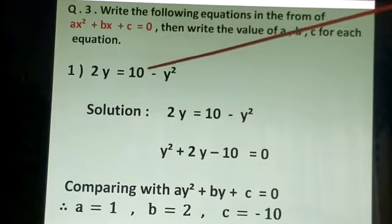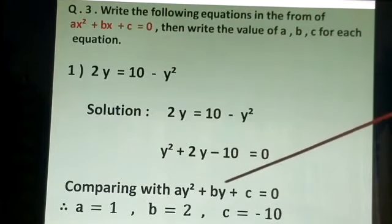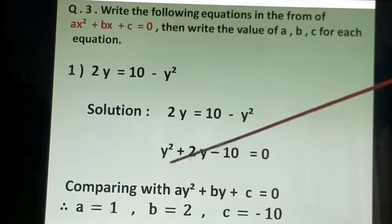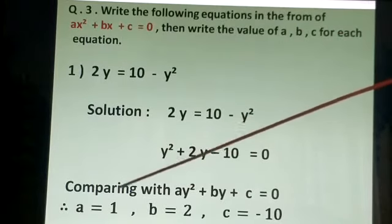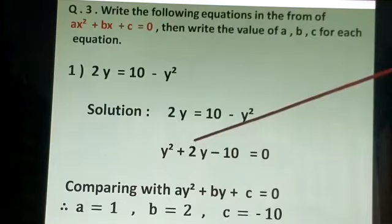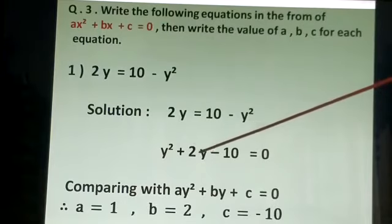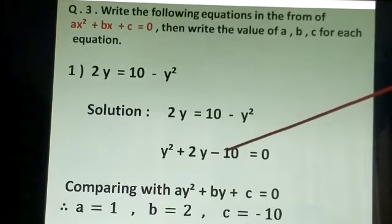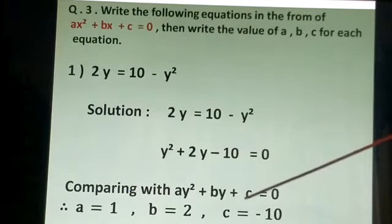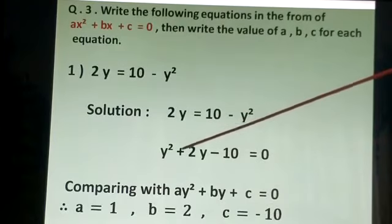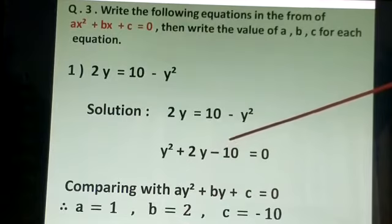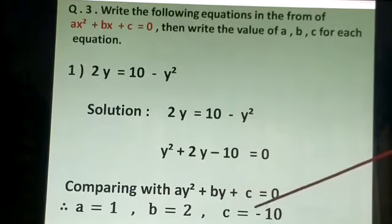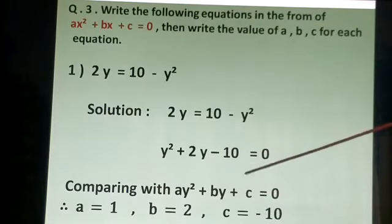अभी इसको compare करेंगे with AY² + BY + C = 0. Form of the equation में X है but अपना equation Y में है तो हम Y करके लिखेंगे. Comparing करेंगे: A का value यहाँ पे कुछ नहीं है, means 1 आएगा. B का value: Y के साथ 2 है, so B = 2. C का value minus 10 लिखेंगे. Step: equation arrange करो, then compare, then write A, B, C values.